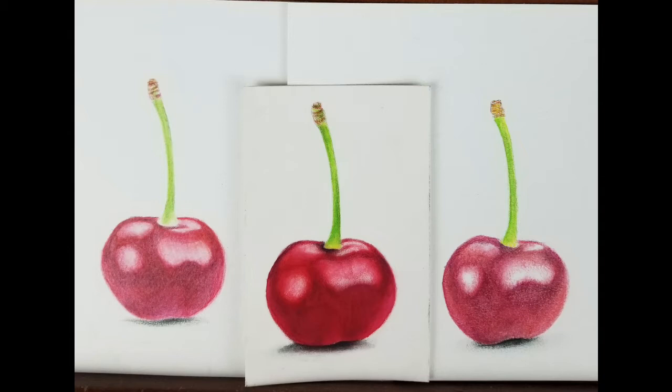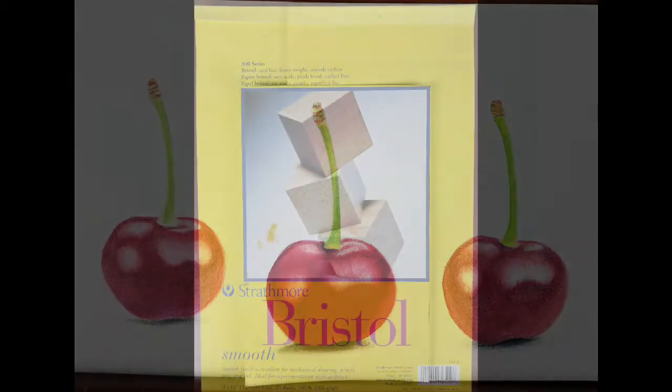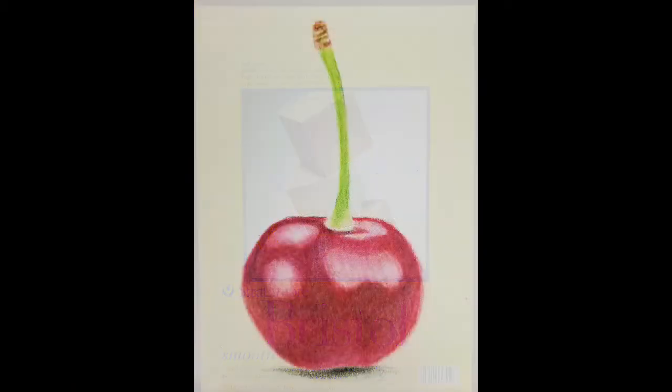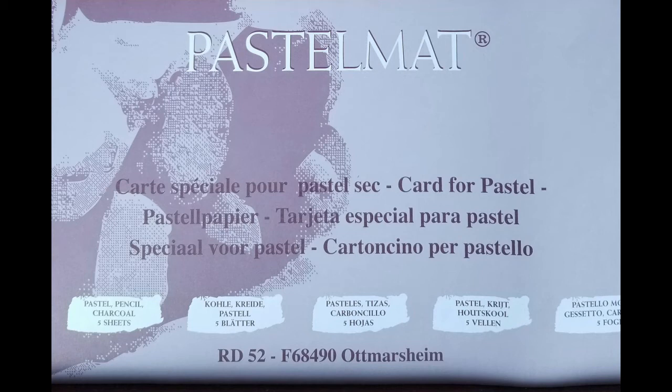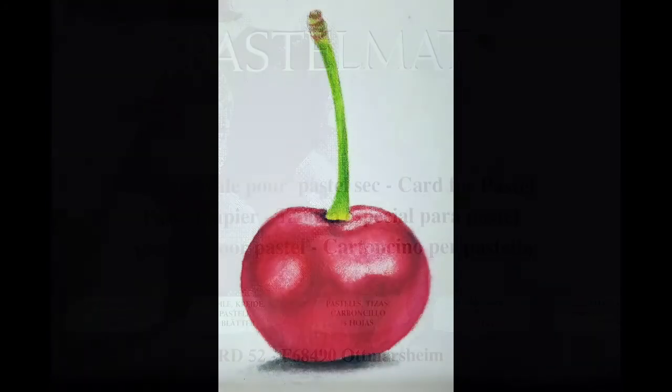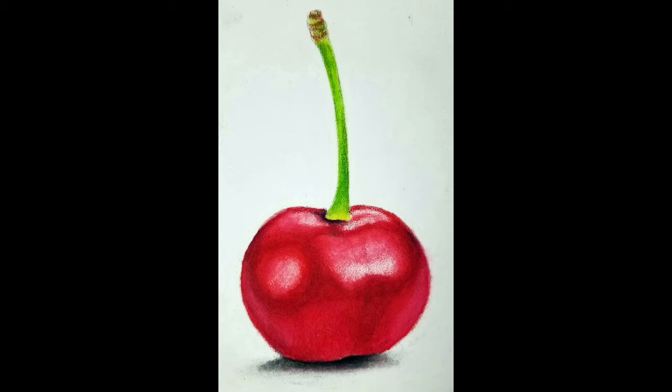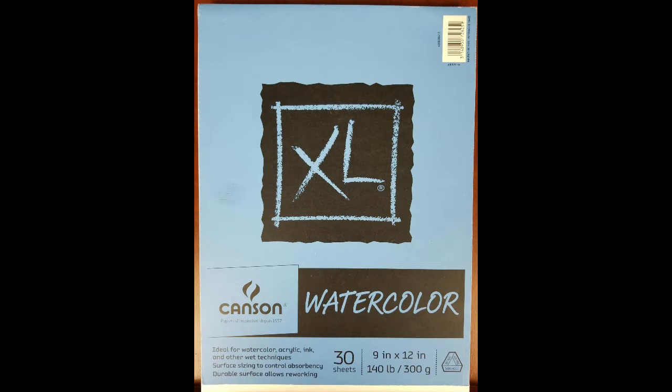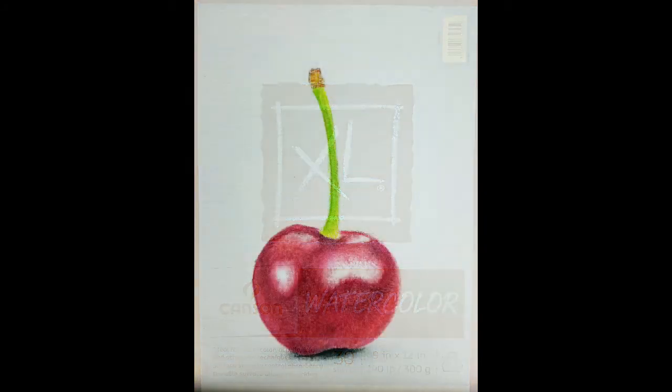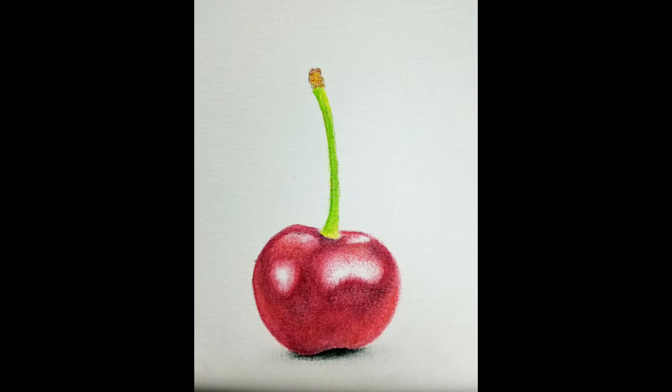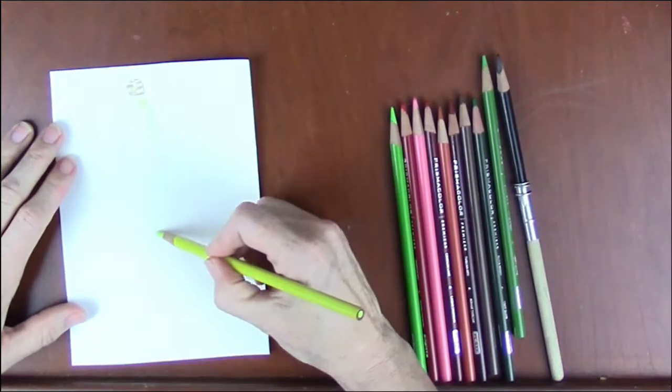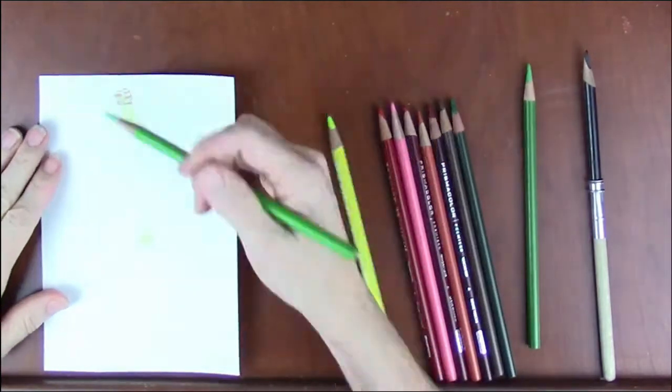The one on the left is created using Strathmore Bristol Smooth paper and it ended up like this. The one in the center is used with a pastel matte surface and came out really vibrant. And then the one on the right is used with Canson watercolor paper and turned out like this. Clearly the pastel matte accepted the solvent the best, so that's the one we're going to be using for our example.